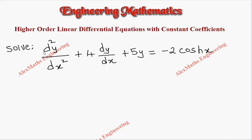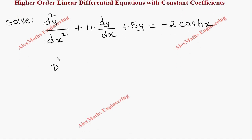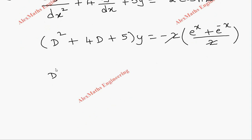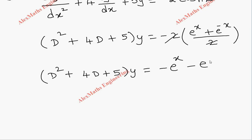Hi students, this is Alex. In this video we're going to discuss a problem where it is given: solve d²y/dx² + 4(dy/dx) + 5y = -2·cosh(x). Let's rewrite this as (D² + 4D + 5)y = -2·cosh(x). We have a hyperbolic function where the formula for cosh(x) is (e^x + e^(-x))/2. Cancelling the 2s, we get (D² + 4D + 5)y = -e^x - e^(-x).